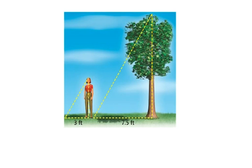Kelly is 5 feet tall and has a shadow that is 3 feet long. This tree has a shadow that is 7.5 feet long. Can you figure out how tall the tree is? To figure this out, we're going to have to use proportions and indirect measurement.